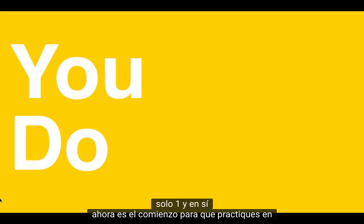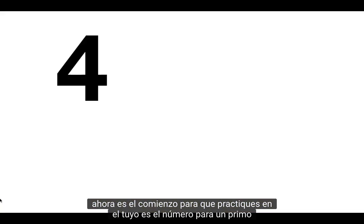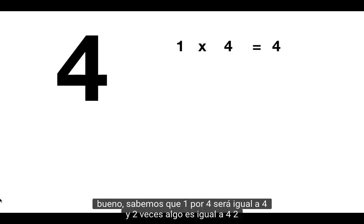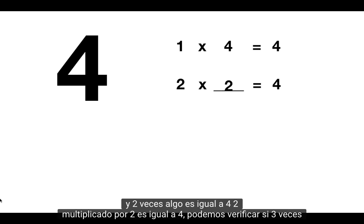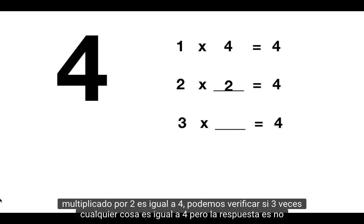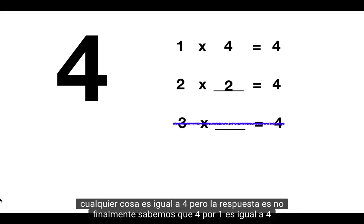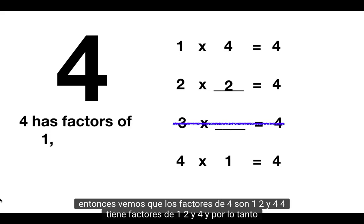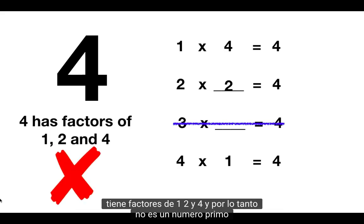Now it's time for you to practice on your own. Is the number 4 a prime number? Well we know that 1 times 4 will equal 4, and 2 times something does equal 4 — 2 times 2 equals 4. We can check if 3 times anything equals 4, but the answer is no. Finally we know that 4 times 1 equals 4. So the factors of 4 are 1, 2, and 4, and therefore it is not a prime number.